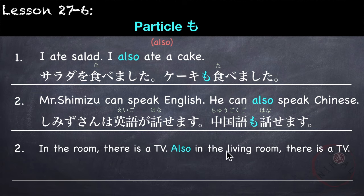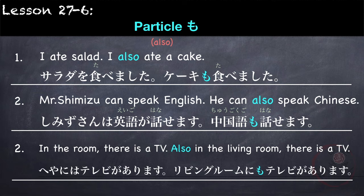In the room there is a TV; also in the living room there is a TV. 部屋には テレビが あります。リビングにも テレビが あります。So に is followed by も — にも.